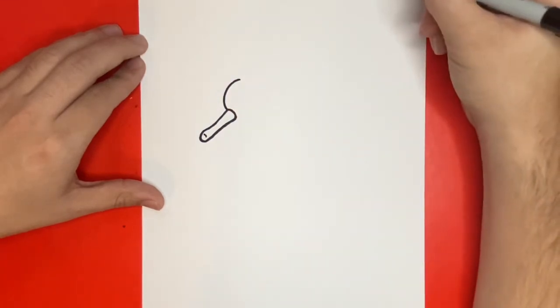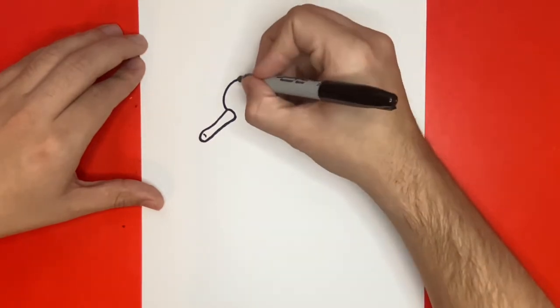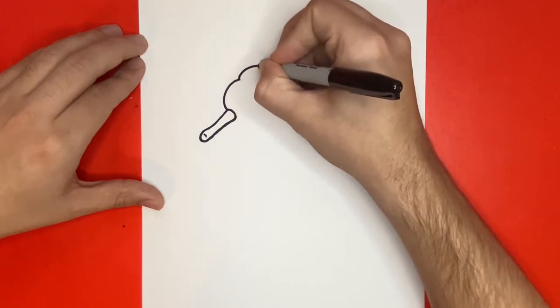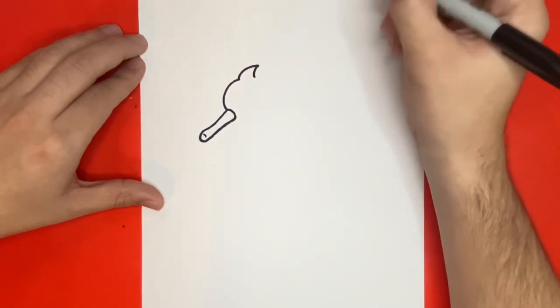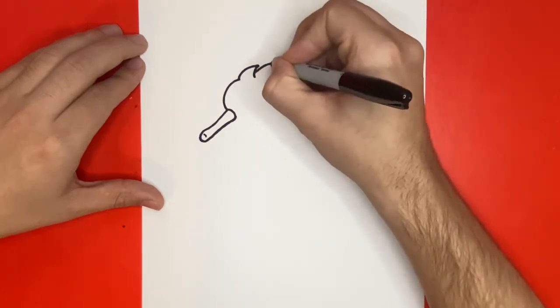Attached to that curved line, we're going to draw a shape that looks similar to an upside-down V that is slightly curved. Now we're going to continue to make these shapes all the way down the back, and they'll all be attached to one another.